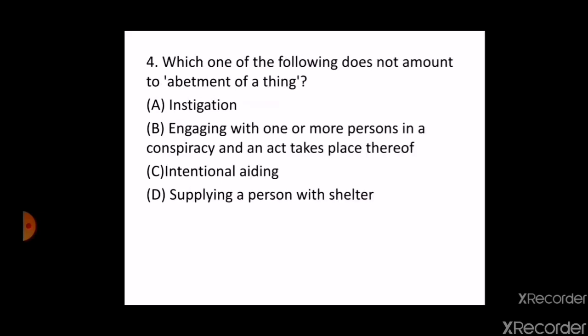The next question is: which of the following does NOT amount to abatment of a thing? A. Instigation, B. Engaging with one or more persons in a conspiracy and an act takes place thereof, C. Intentional aiding, D. Supplying a person with shelter. The correct answer is D — supplying a person with shelter. Abatment of a thing can be done by instigation, conspiracy, and intentional aiding. This was asked in the Himachal Pradesh Judicial Examination in 2018.